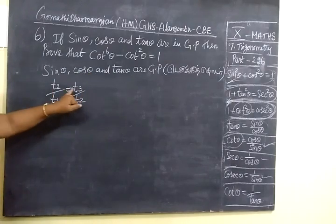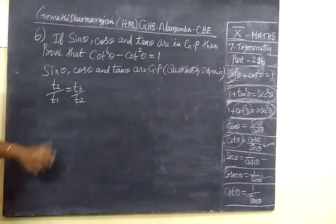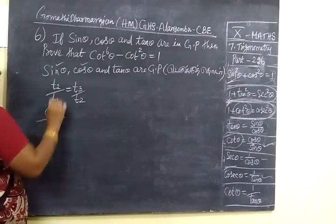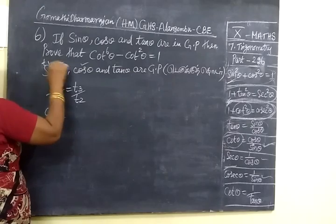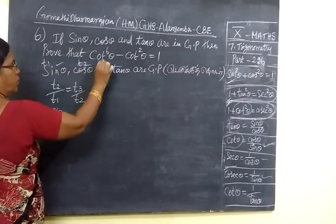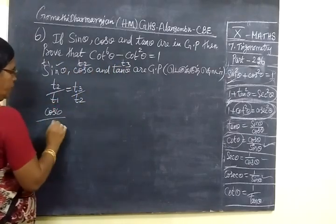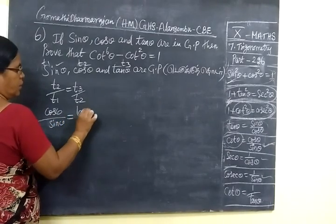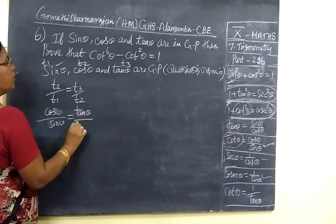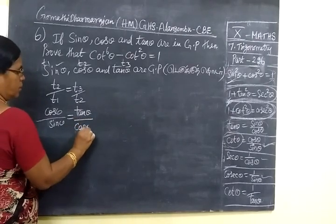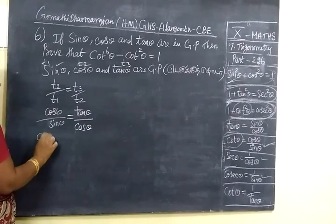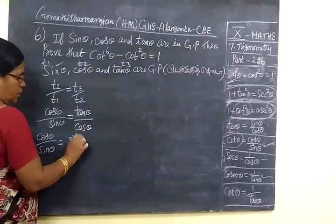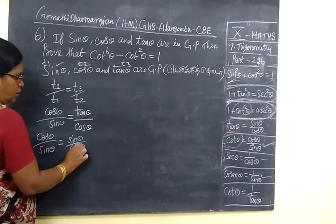So T2 is cos theta. So cos theta by T1 sin theta. This is T1, T2, T3. By sin theta equal to T3. Tan theta by T2 cos theta. So cos theta by sin theta. Tan theta is sin theta by cos theta.